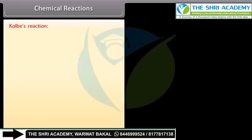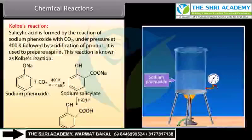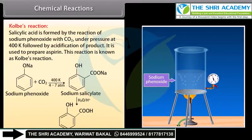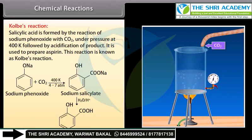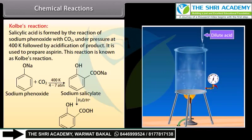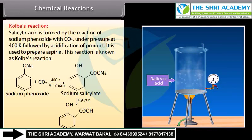Kolbe's reaction: Salicylic acid is formed by the reaction of sodium phenoxide with carbon dioxide under pressure at 400 Kelvin, followed by acidification of the product. It is used to prepare aspirin. This reaction is known as Kolbe's reaction.